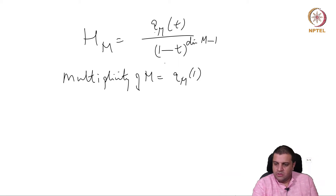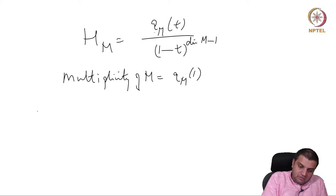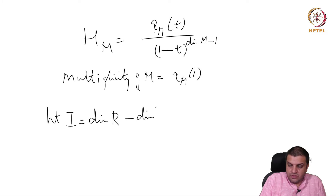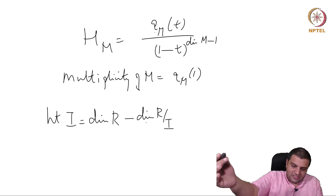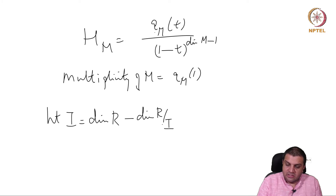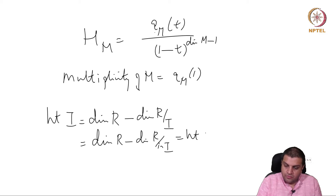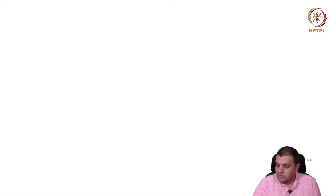Dimension is given by: the Hilbert series of M is given by q_M(t) over (1 minus t) to the dimension of M minus 1. If two modules have the same Hilbert function, they have the same dimension and the same q_M, and multiplicity of M is q_M(1). Therefore, things that depend only on the Hilbert function — dimension, multiplicity — agree. For height: height of I equals dimension of R minus dimension of R mod I. This is true in a polynomial ring. Therefore, I and in(I) have the same height.